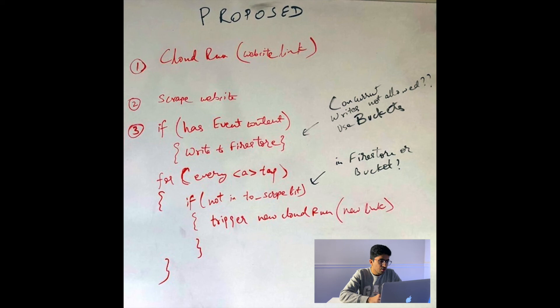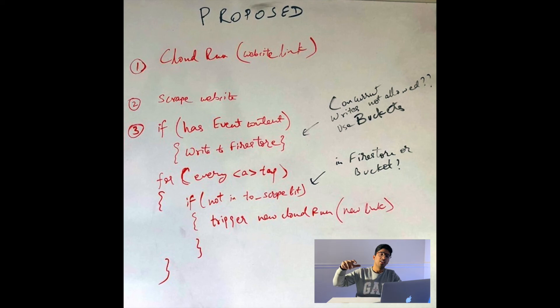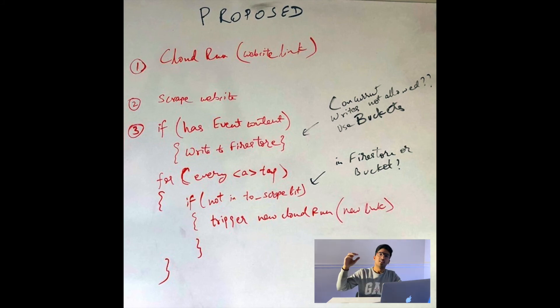In their pseudocode, they have a Cloud Run with the website link — that's fine. They scrape the website — fine. If the website has an event, they write it to Firestore. That's pretty common and basic. But after that, they have a loop for every anchor tag. For every anchor tag, if it's not already in the array or database, they trigger a new Cloud Run, store a new link, and start a new thread to go through that page. This is a continuous process — but can you spot any problems in this implementation?